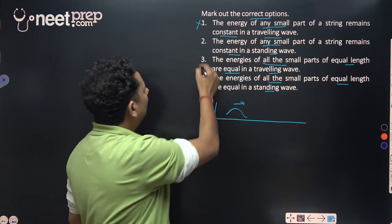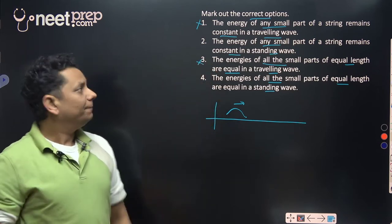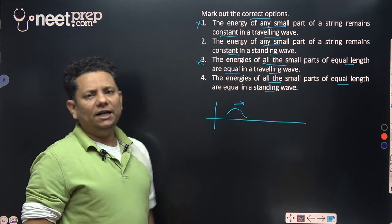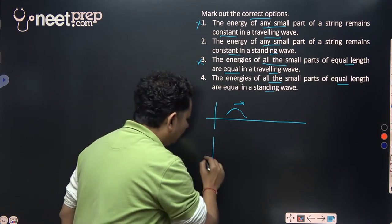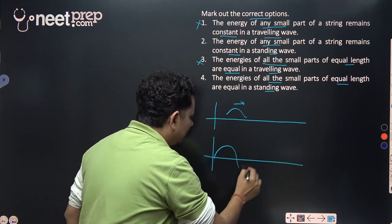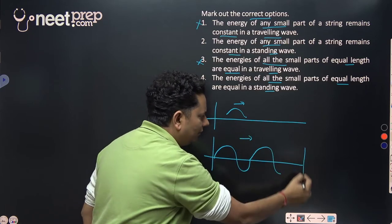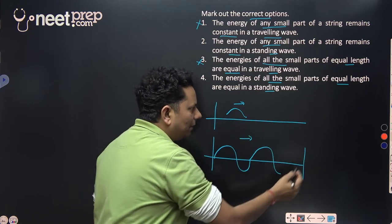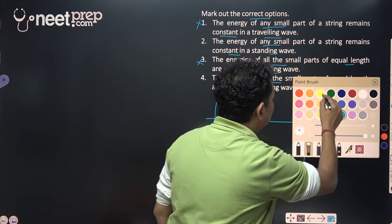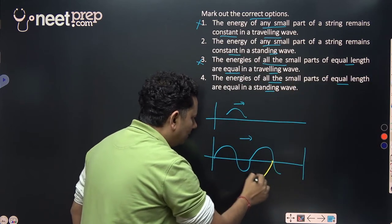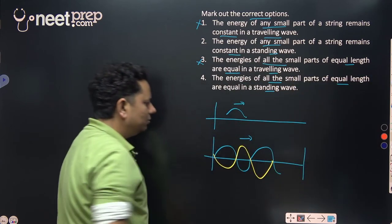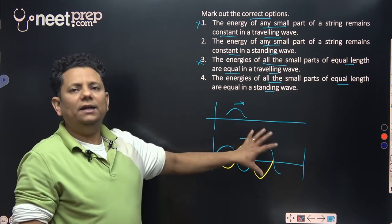Similarly, energies of all small parts being equal in a traveling wave, that statement is also not correct. Next, let's talk about standing waves. In a standing wave, you produce a wave like this, it travels, hits the fixed end, and comes back. Let me draw it in a different color.